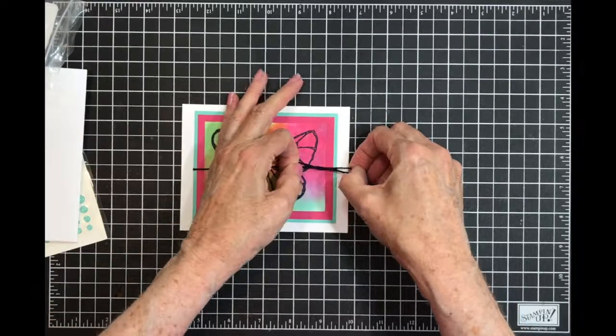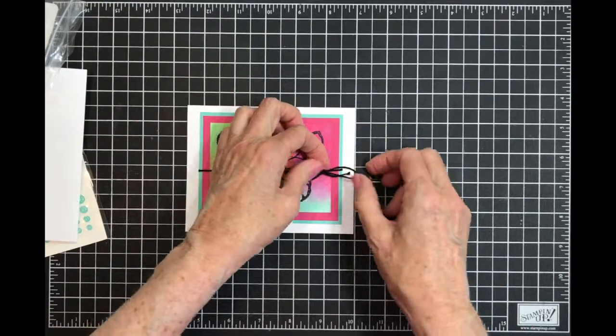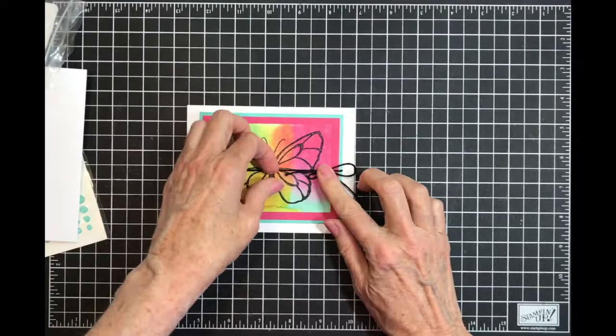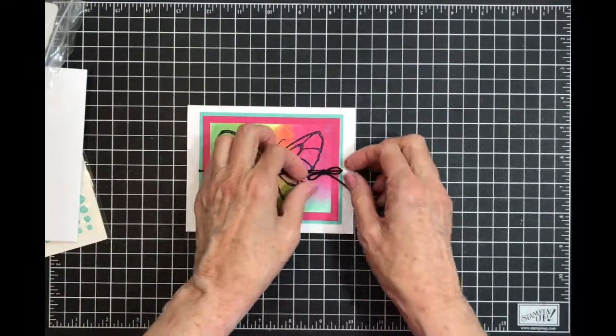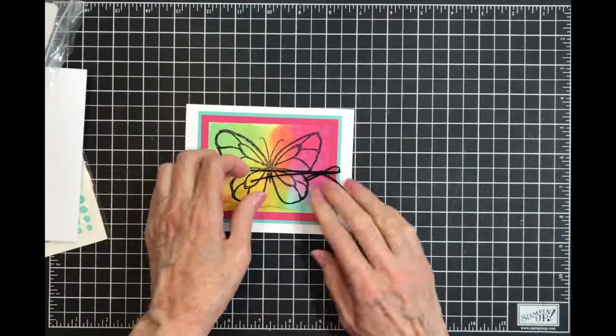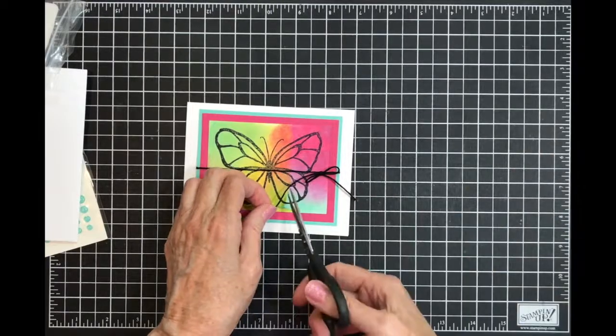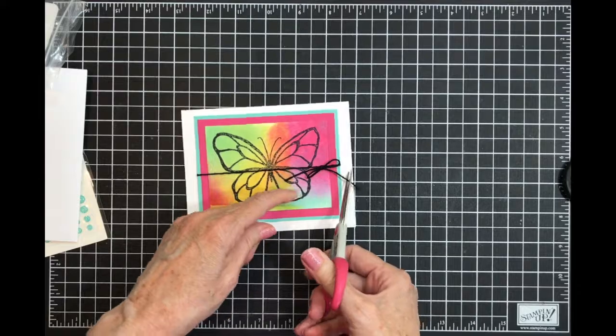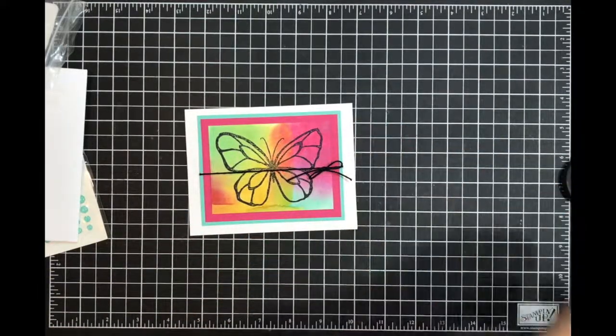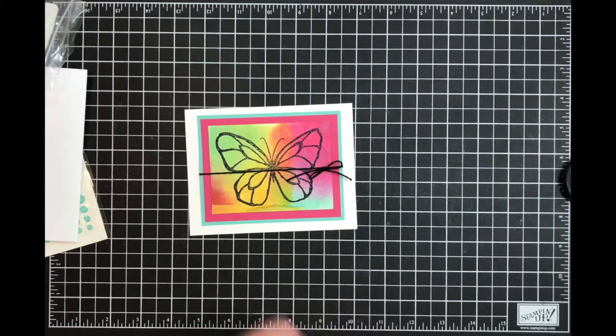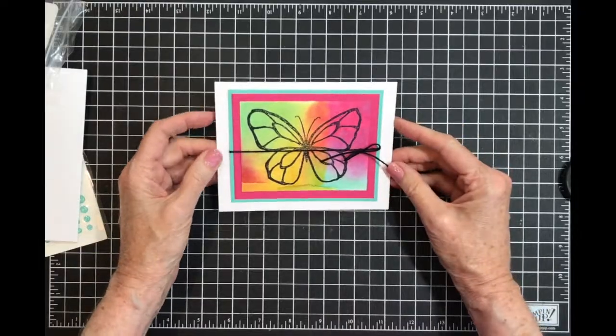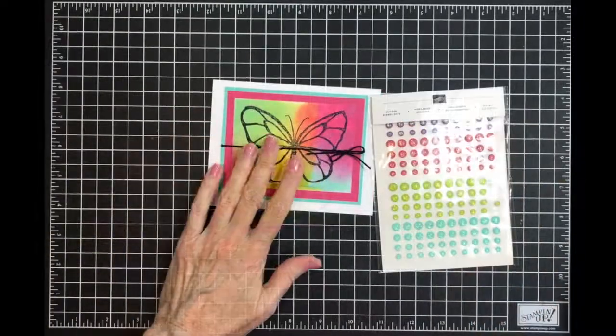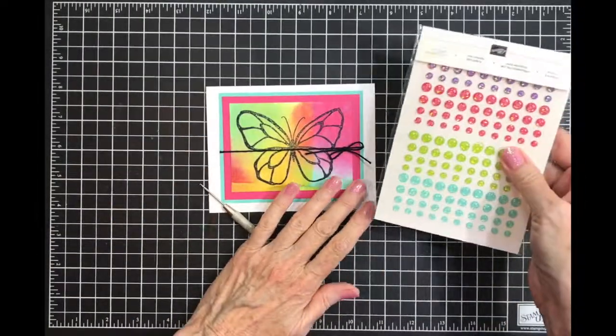I can tie my bow, pull my ends because my bow's too big. I like little bows. Now I'm going to trim my ends. So I shouldn't be using that, should be using my ribbon scissors.